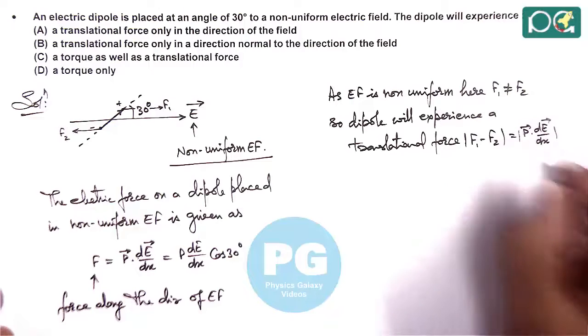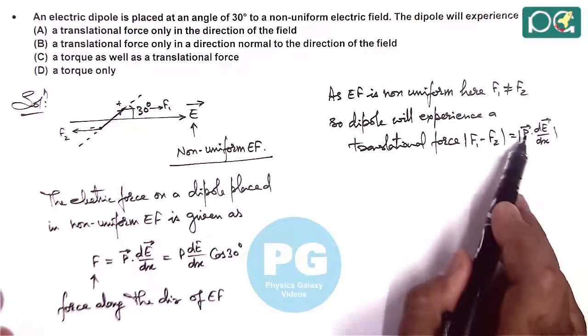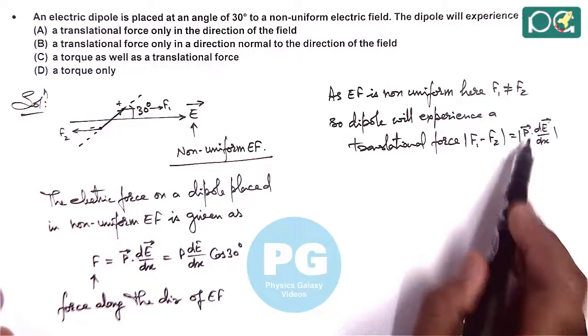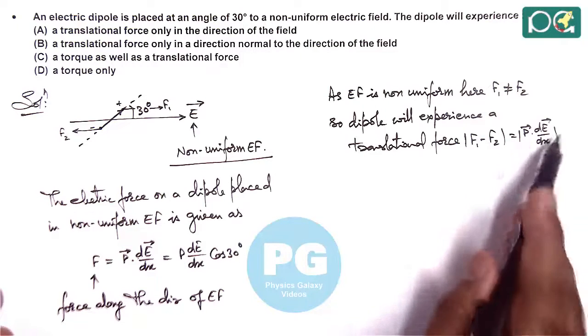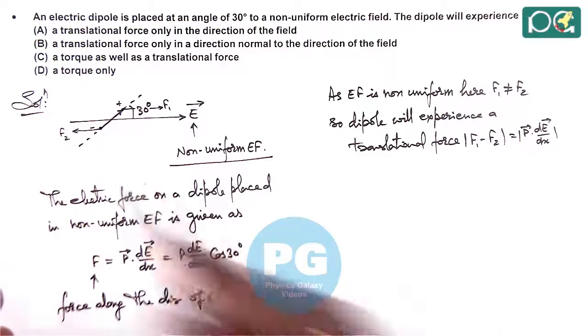This is the magnitude we consider because p dot E is the potential energy and negative of the derivative of potential energy or negative of the potential gradient is the net force acting on this.